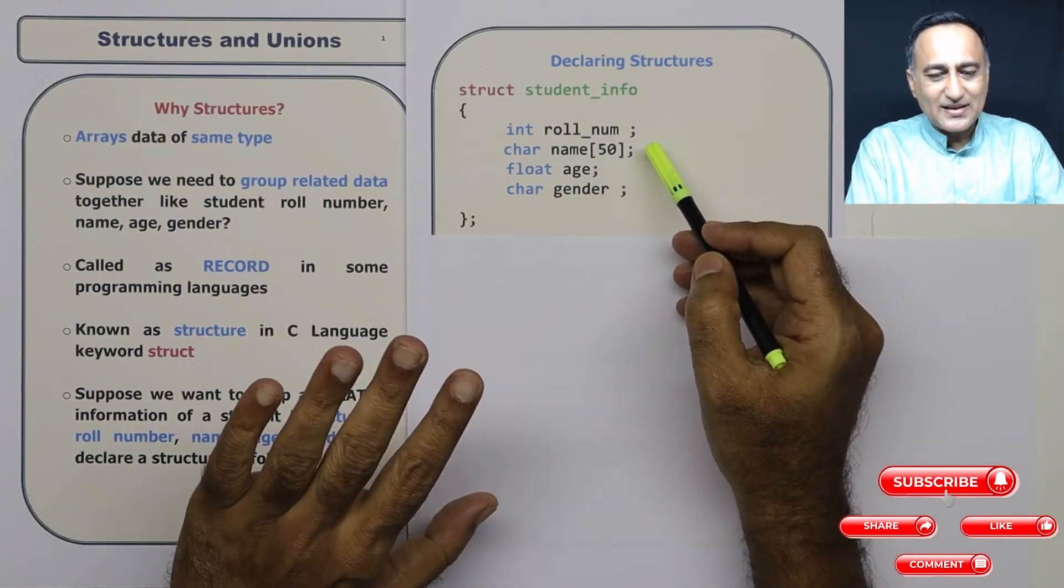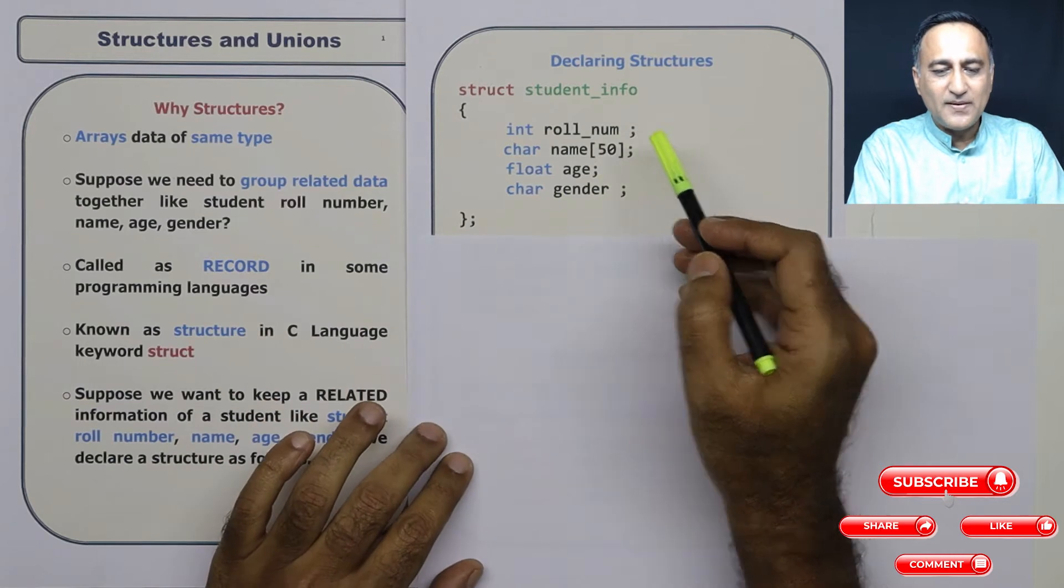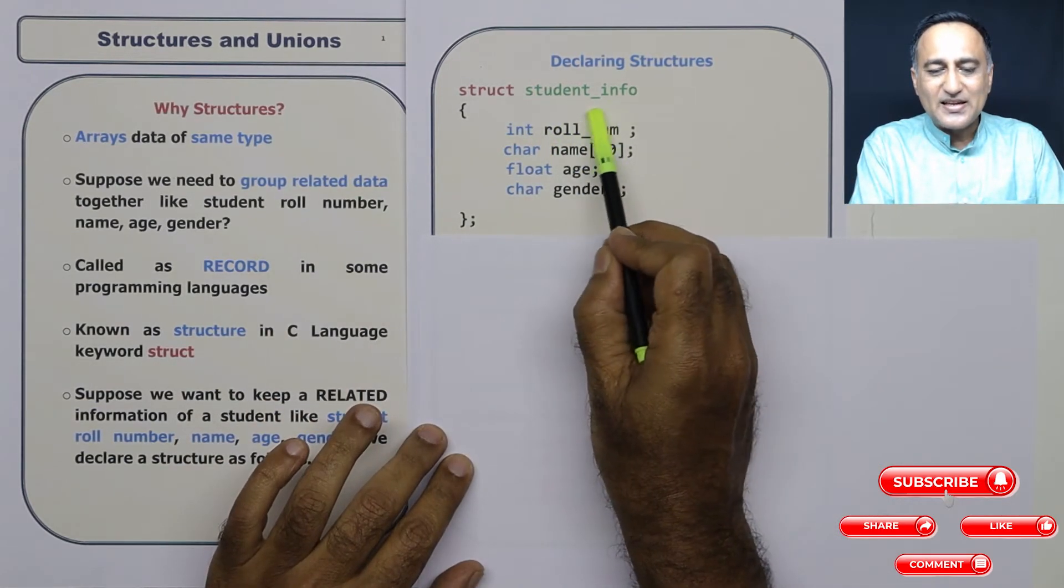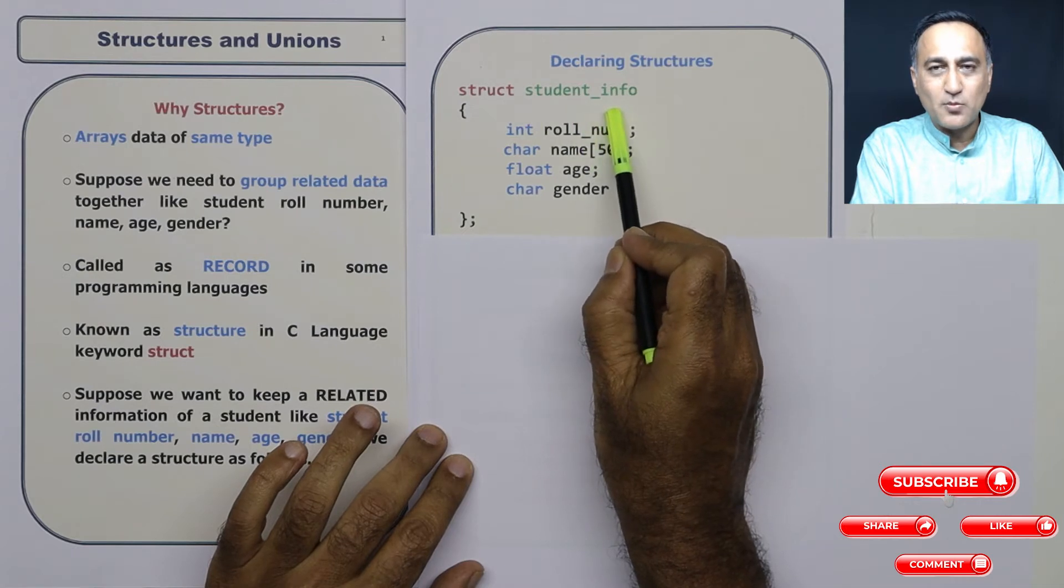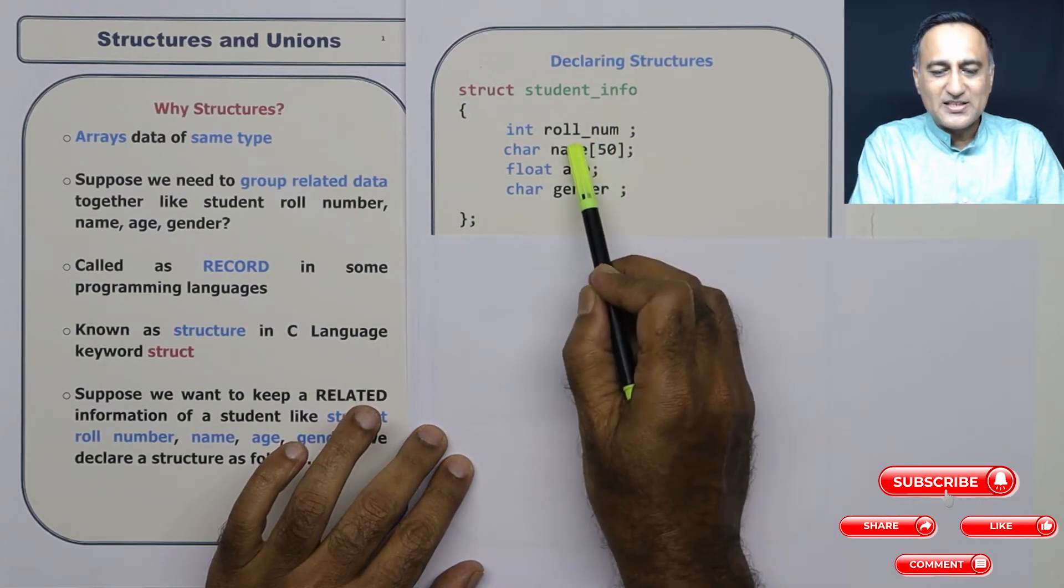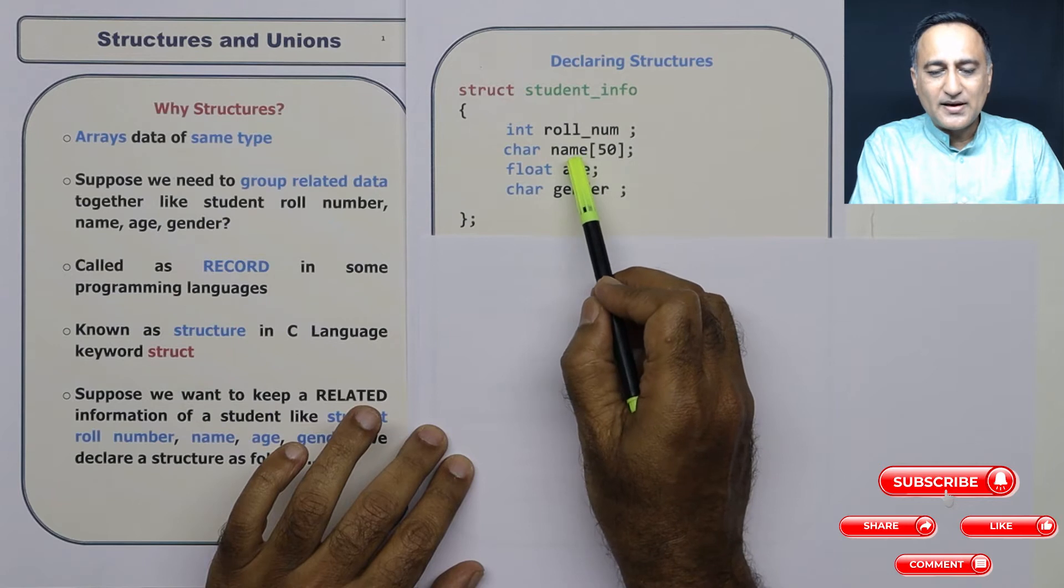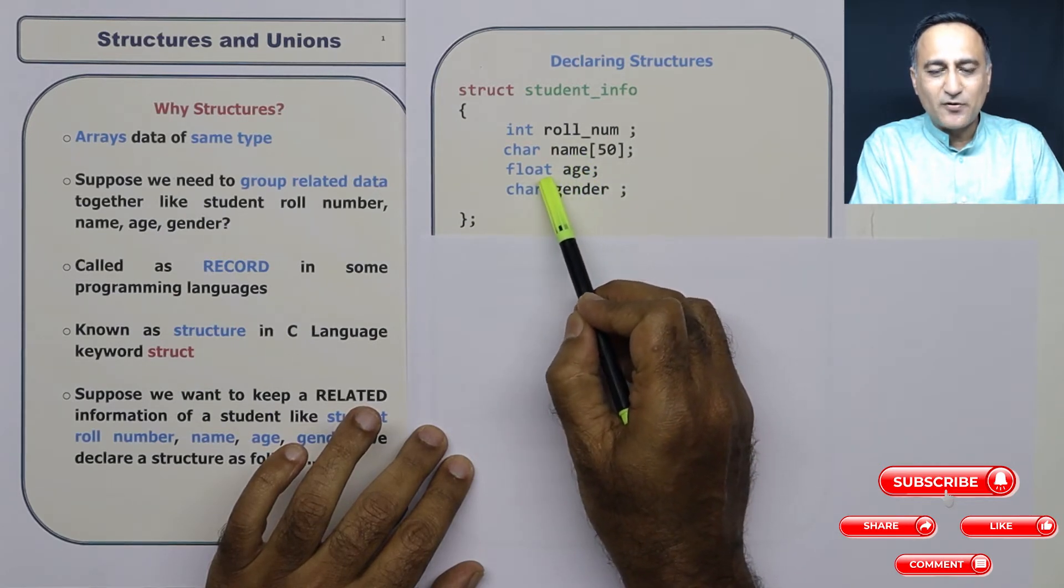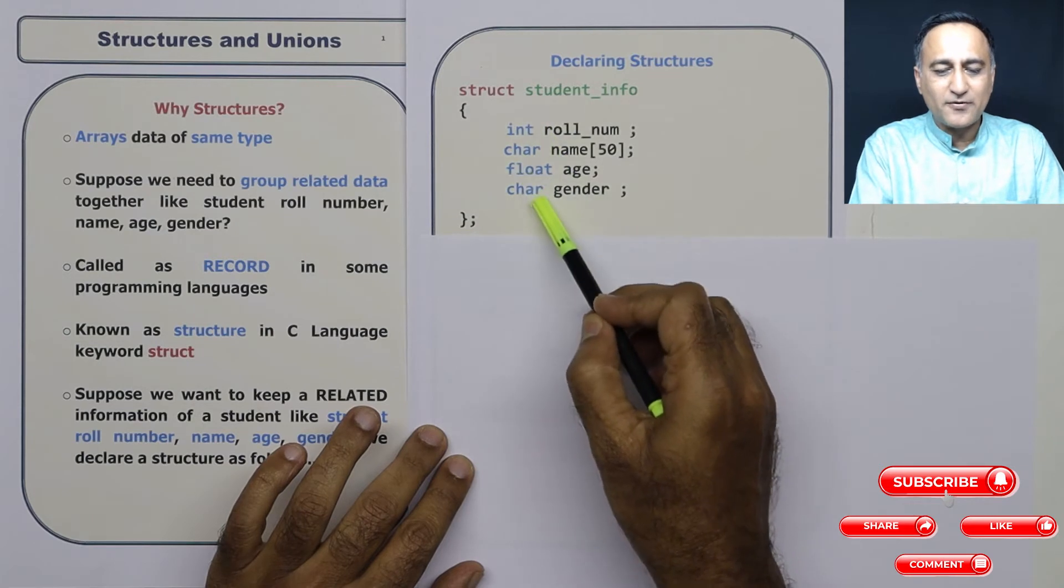So just look at the declaration very carefully. This struct is a keyword. This is the name of the model. I'll tell you what the model or prototype is. This is the first field role number, char name 50, age. I purposely given float so that you can see data of different types.